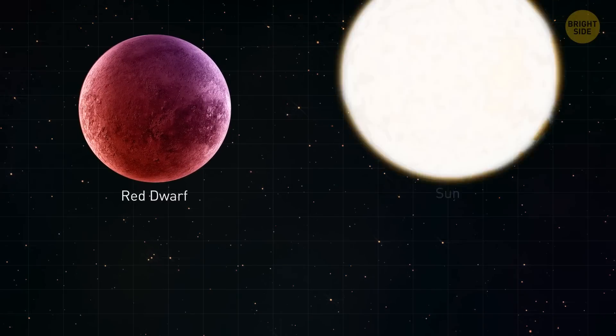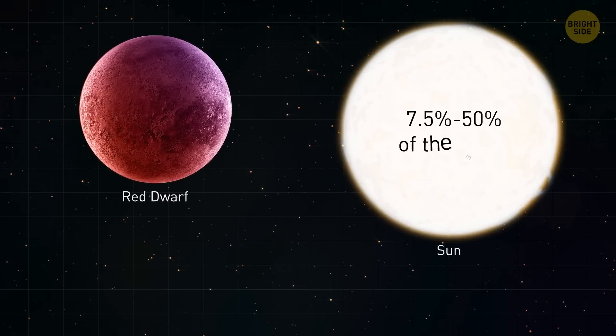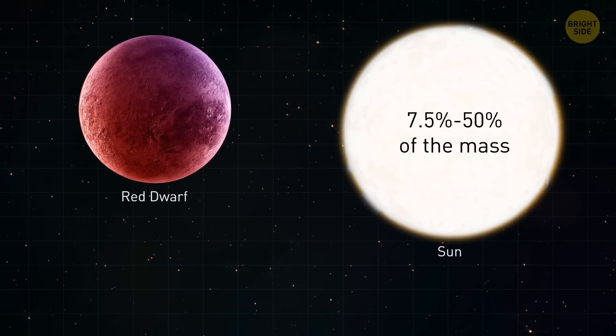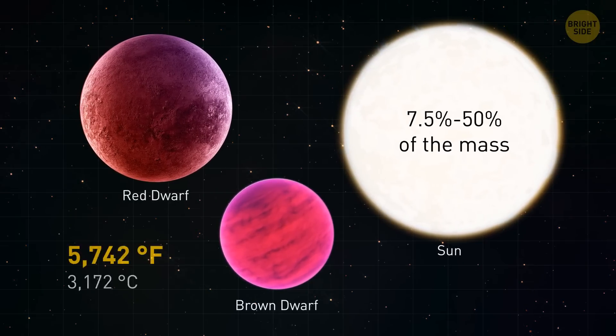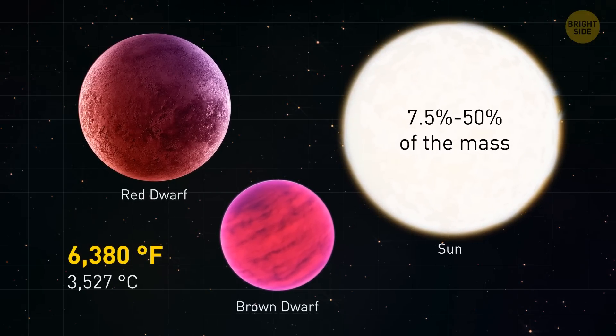Red dwarfs are stars with masses around 7.5% to 50% of the mass of our Sun. Red dwarfs are also hotter than brown dwarfs. Their temperature can reach 6,380 degrees Fahrenheit.